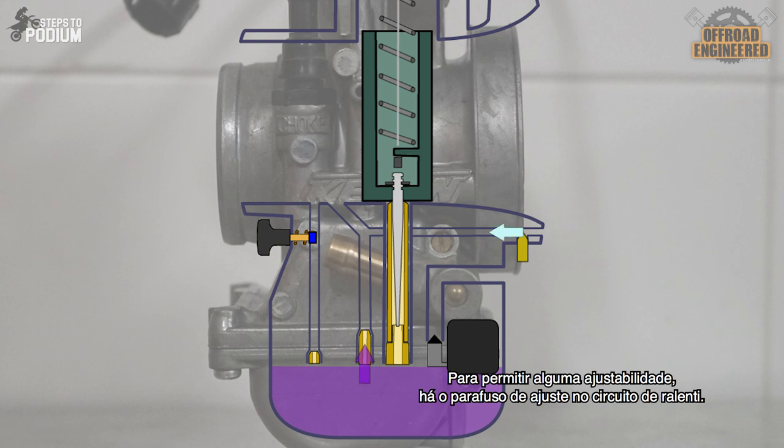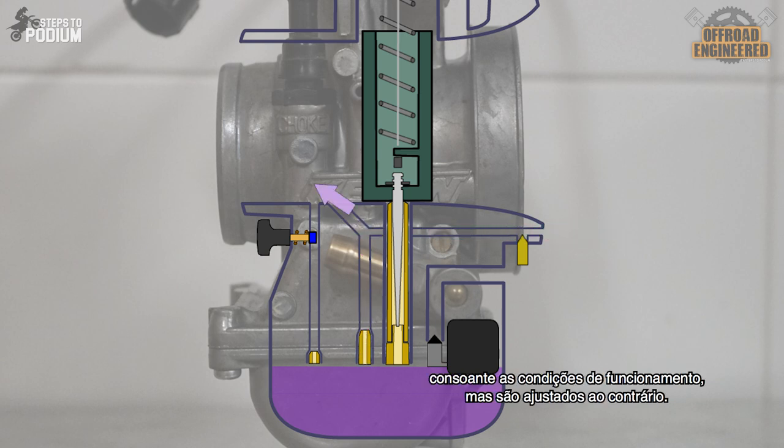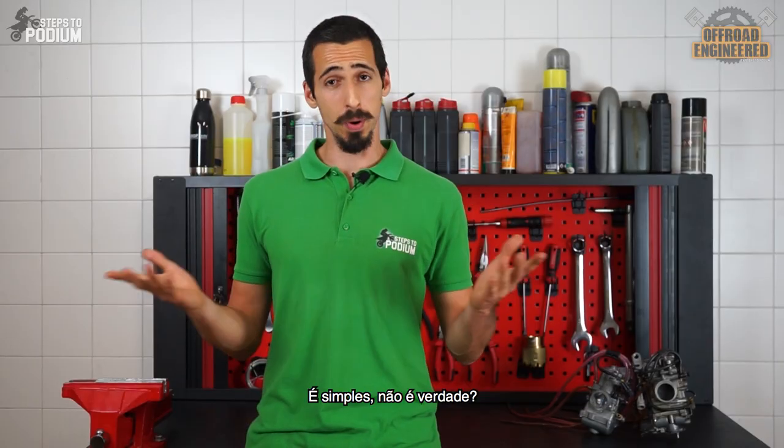To provide some adjustability there's the adjustment screw in the idle circuit. You can either find an air adjustment screw or a fuel adjustment screw. Both make the idle mixture leaner or richer depending on the running conditions, but are adjusted in reverse. Quite simple, right?